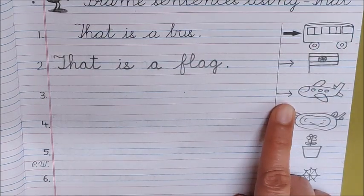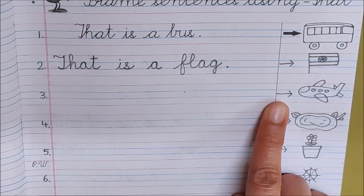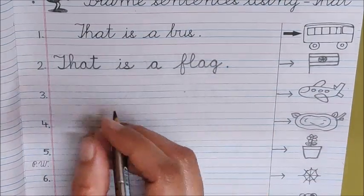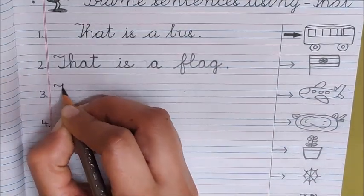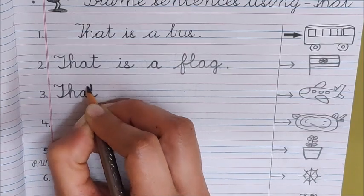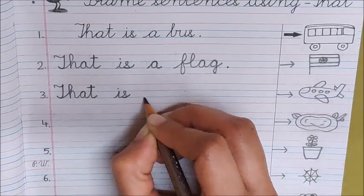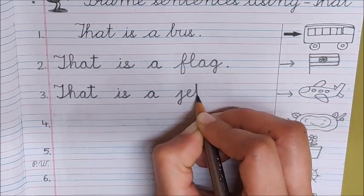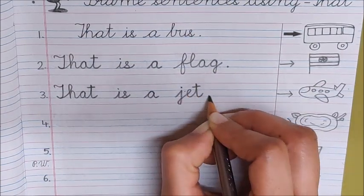Now look at the next picture. What is that? That is a nest. So write the sentence here. That T H A T. That is a jet. Full stop.